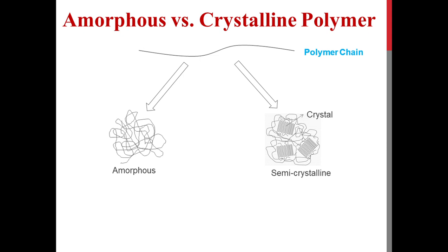If a chain forms a crystalline region the polymer is called a crystalline polymer, but in reality they are semi-crystalline polymers. A polymer cannot be 100% crystalline for two main reasons. First, chain ends are chemically very different from the main chain, so they cannot be part of a crystalline phase. Second, one chain can belong to two or more crystalline phases, so the part of the chain between two crystals remains in the amorphous region.